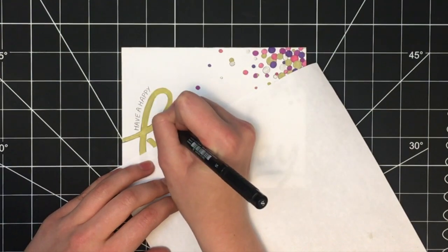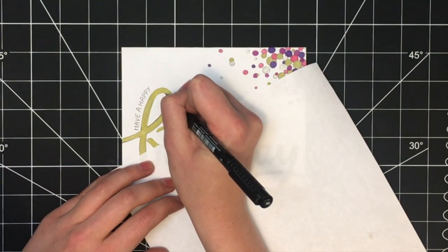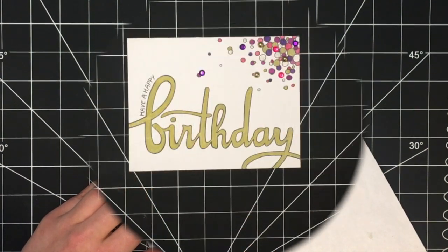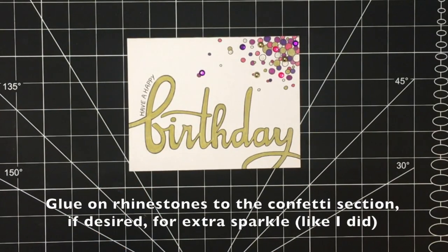To finish it off, I traced over the word Birthday again using a black thin pen to outline it to really make that word pop. And ta-da! You are done! Hope you enjoyed the video.